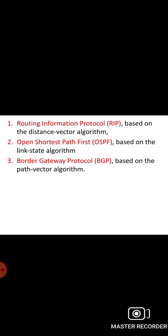Welcome to this presentation. Today we are going to see about the unicast routing protocols. There are three categories of unicast routing protocols: RIP, that is Routing Information Protocol, which is based on the distance vector algorithm; OSPF, that is Open Shortest Path First, which is based on link state algorithm; and the third protocol is Border Gateway Protocol, based on path vector algorithm.